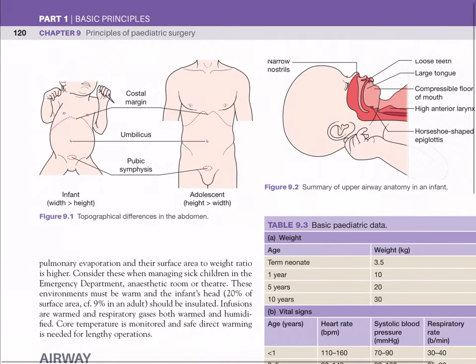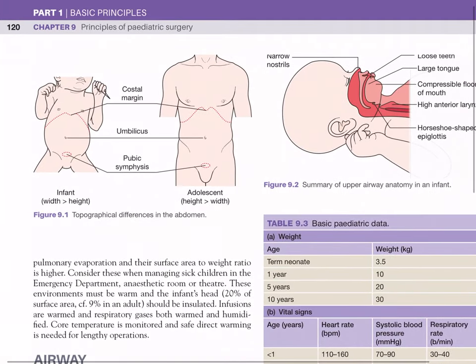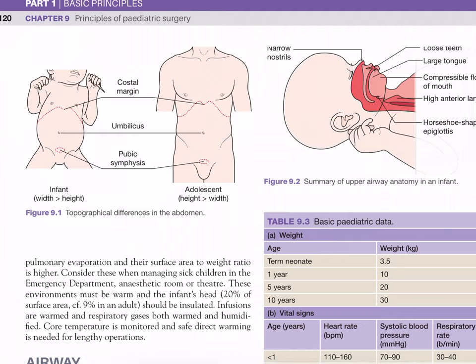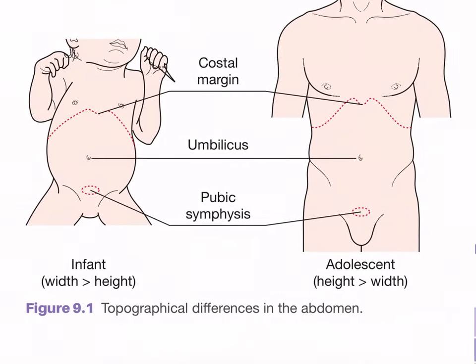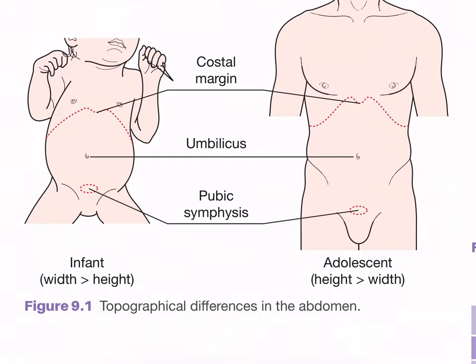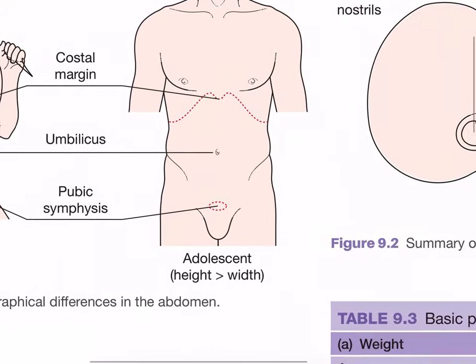Here we see Figure 9.1, topographical differences in the abdomen. We can see the costal margin and the angle of the costal margin in adults and child. In the child it is more obtuse and in adults it is more acute. The umbilicus is low-lying in the paediatric age group. The pubic symphysis can be seen in both cases.